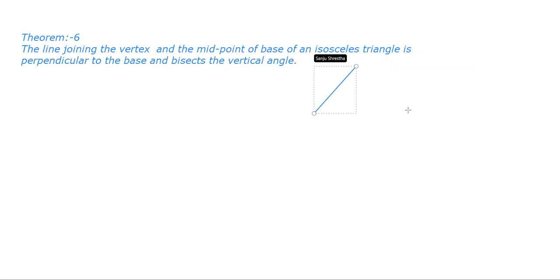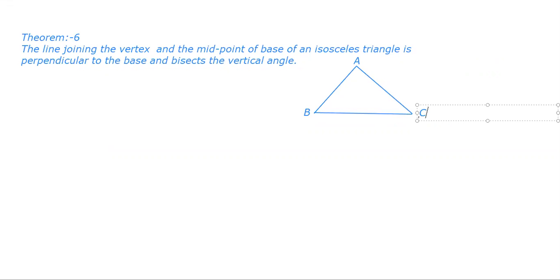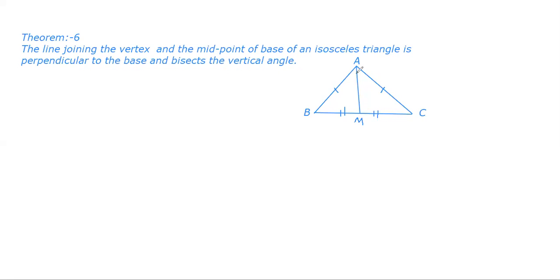Since it is an isosceles triangle, these two sides are equal. The line joining the vertex and midpoint means these two lines are equal. So, suppose M is there. Now we have to prove that this line is perpendicular to the base and these two angles are equal.